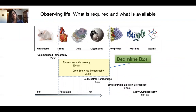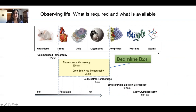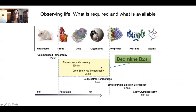I'll start by putting things into context. When trying to understand a system, we need to collect information from the macro level — the whole organism — through tissue, cells, organelles, all the way to the fine details of proteins and atoms. For each of these scales, different techniques have been developed, from CT for whole organisms and tissue, all the way down to X-ray crystallography. Beamline B24 specifically uses fluorescence microscopy and soft X-ray tomography to image mostly cells, organelles, complexes, and tissue slices.